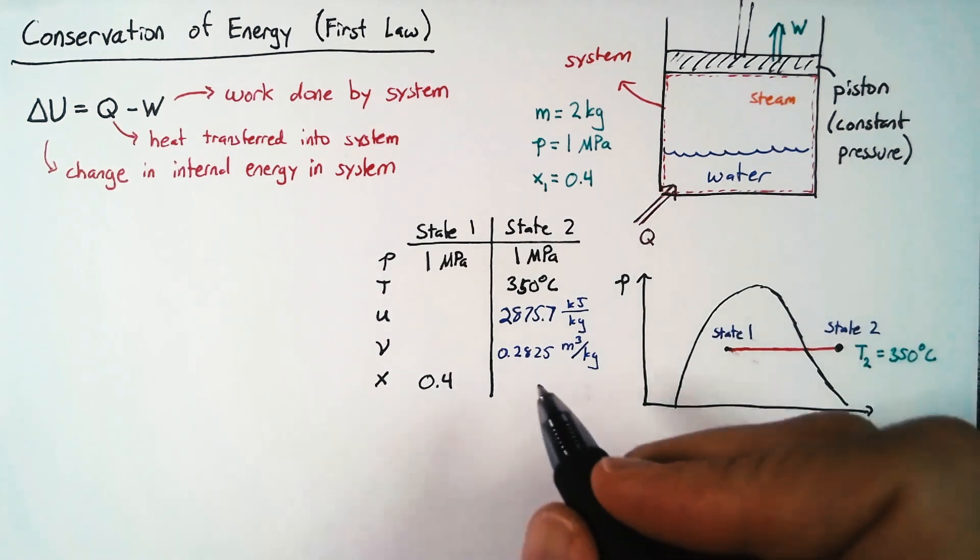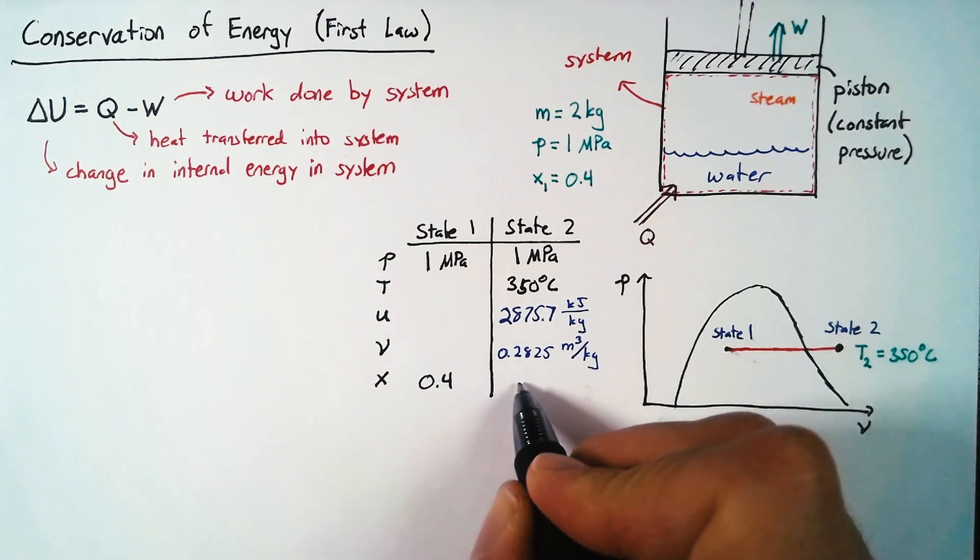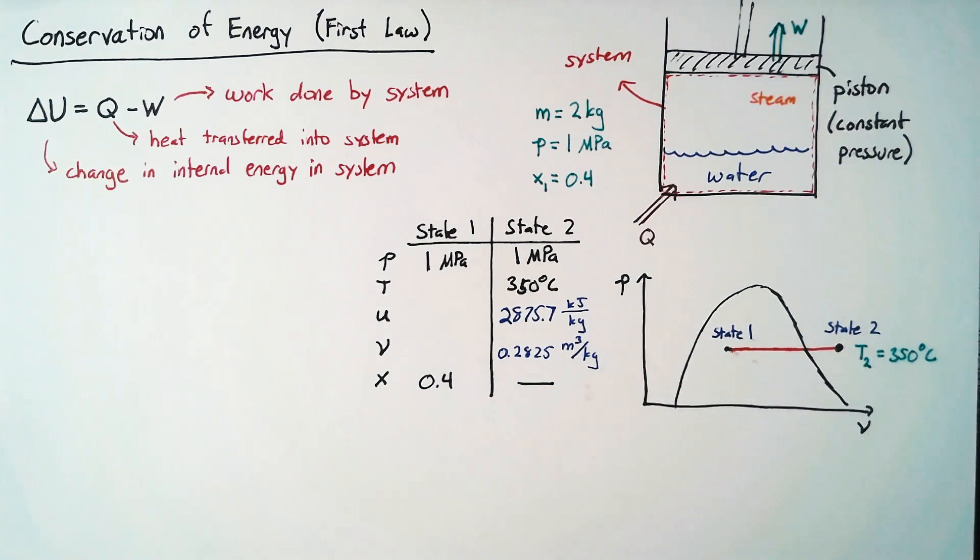Just for completion's sake, we can say that the quality for state 2 doesn't make sense. There's no quality outside of our vapor curve. And so we can just nix that completely.